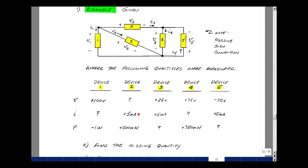For device number two, I know the current and the power, and again, voltage times current is power. So the voltage is going to be the power divided by the current. So 500 milliwatts divided by five milliamps, that's a hundred volts.